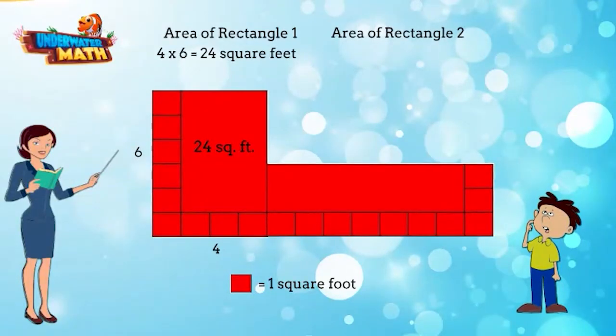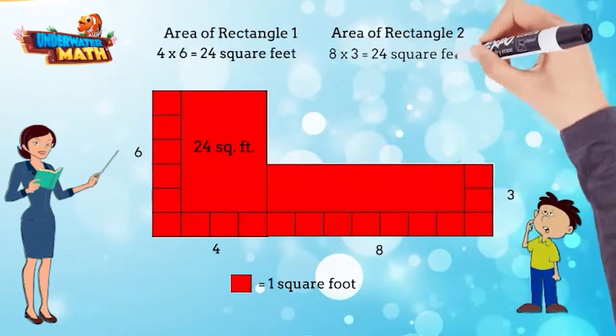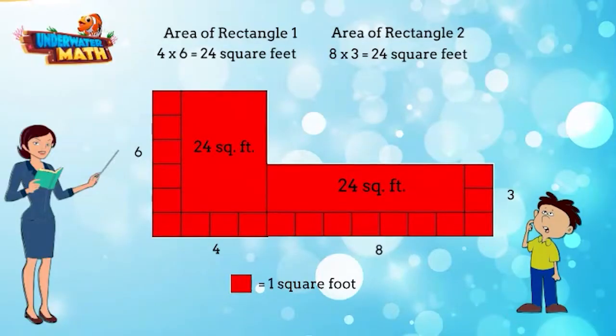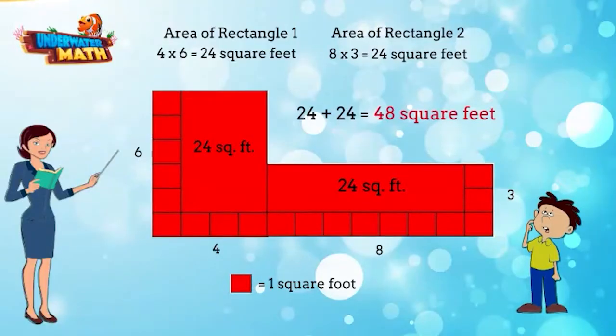The length is eight, the width is three. Eight times three equals 24. The area of rectangle two is 24 square feet. Great job in finding the area of each rectangle. Now what is your next step? Now I add both areas together to get the total area of this figure. 24 plus 24 equals 48. The area of this figure is 48 square feet.